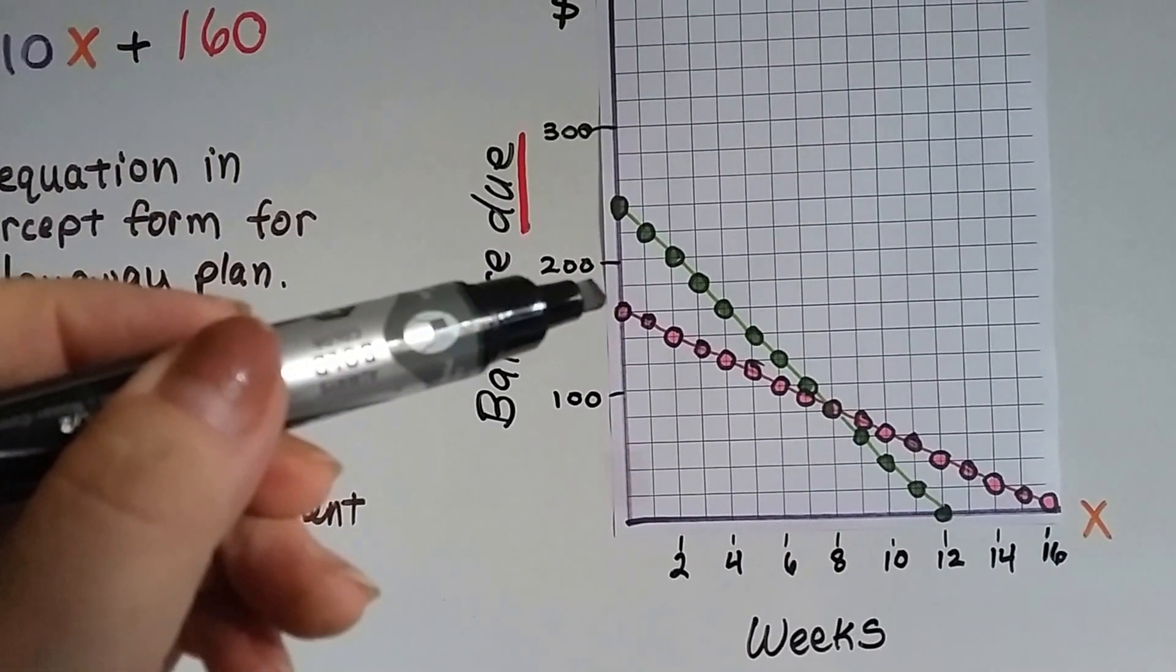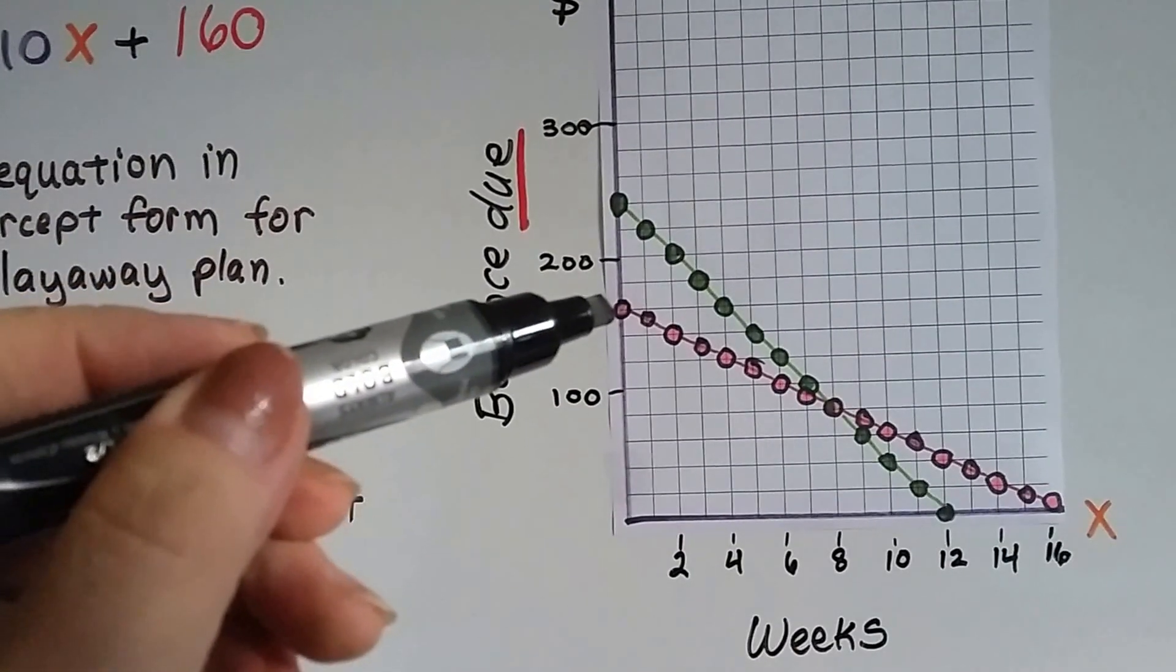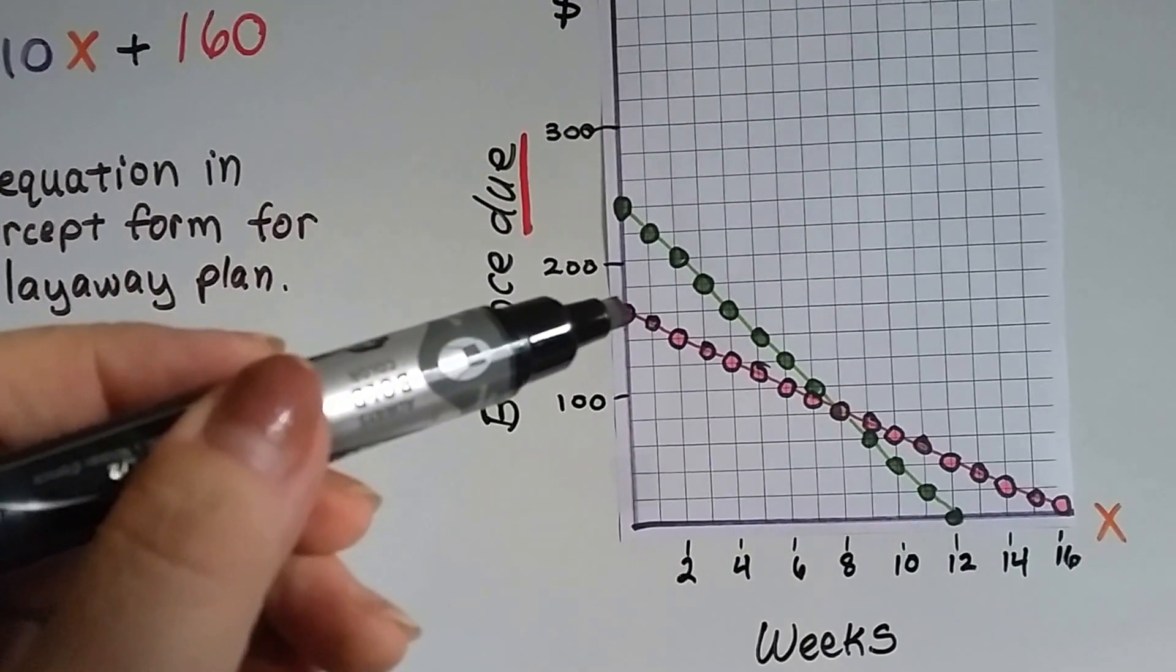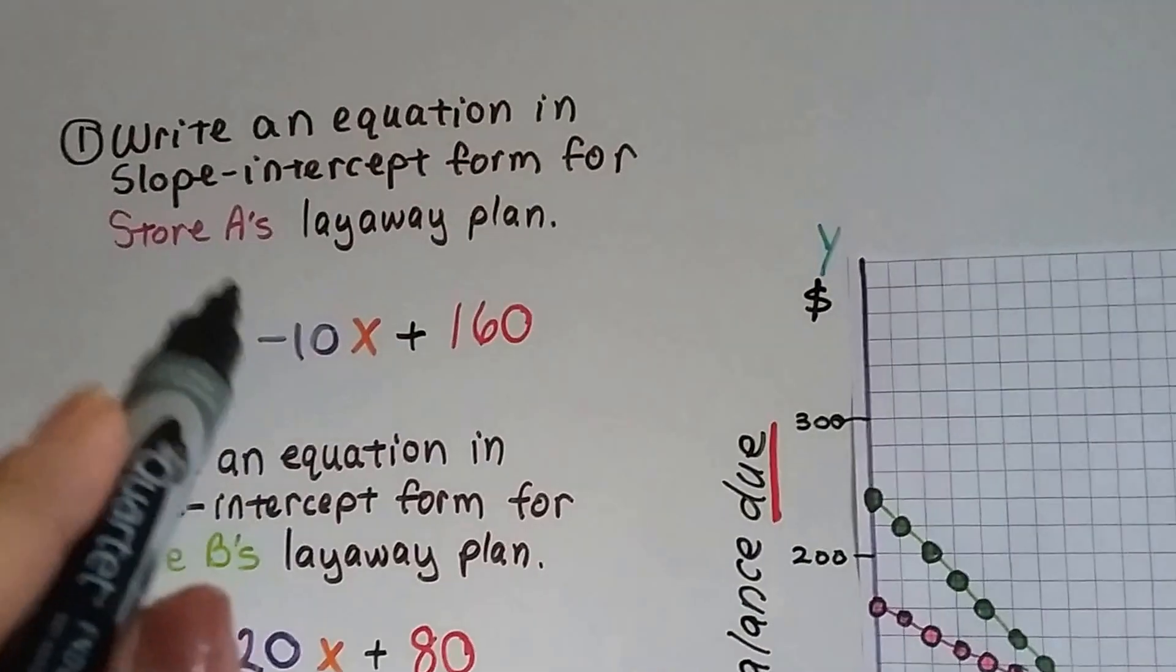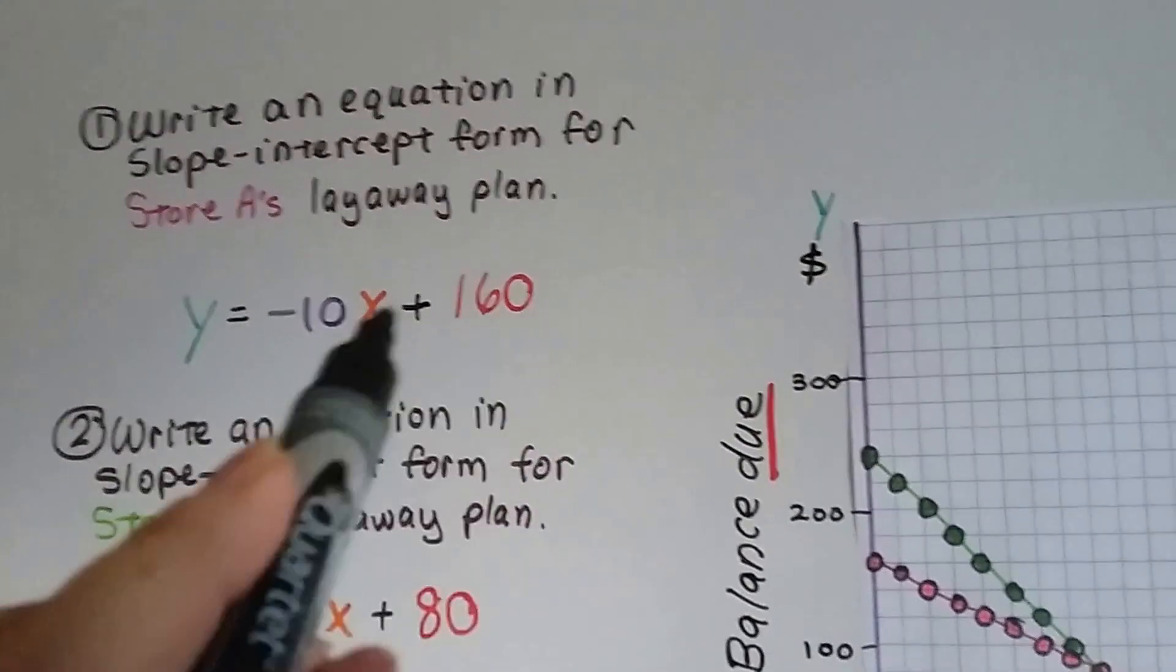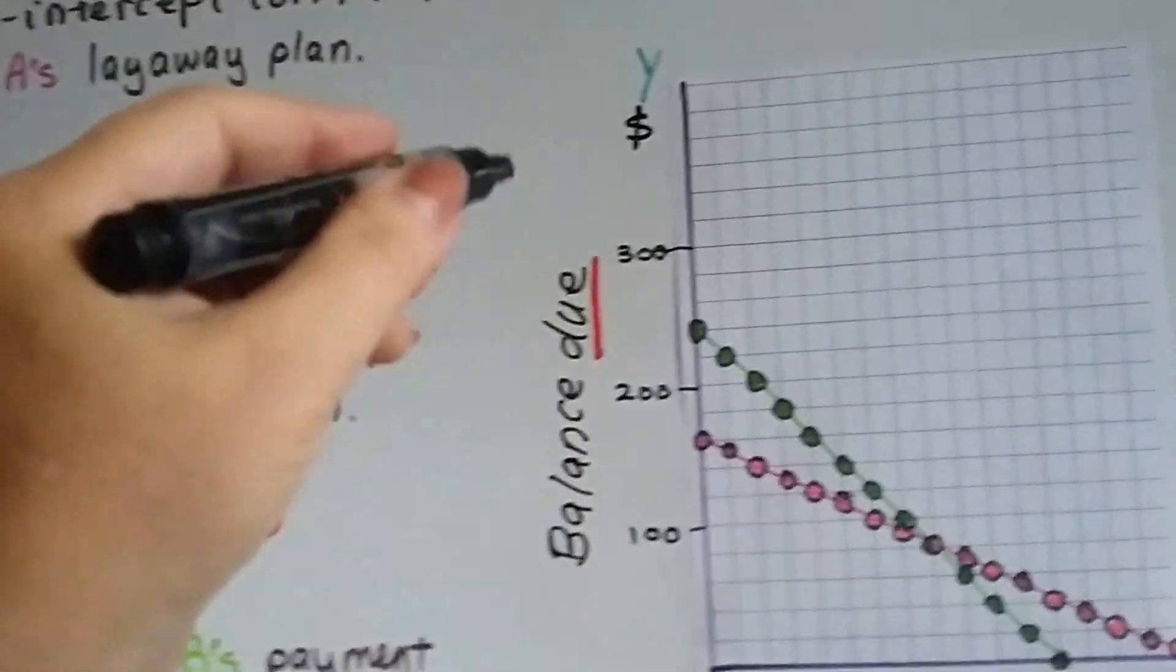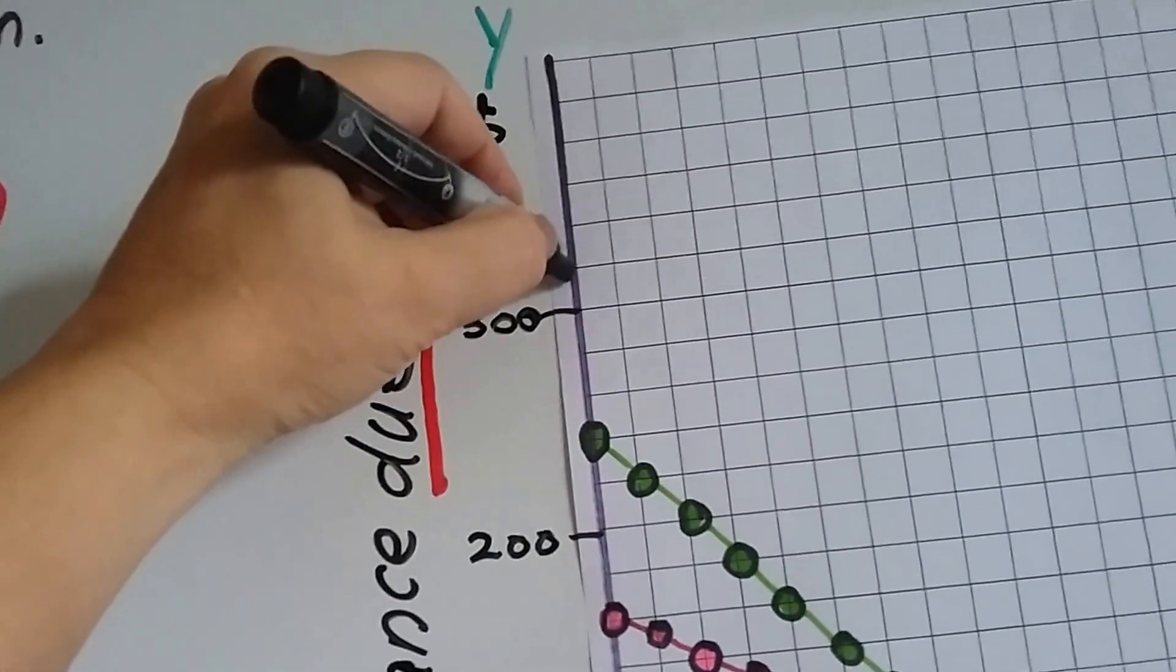And you can see for the pink one, right here, there's a $160 balance due. That means he must have paid $160 up front because the game was initially up here at $320.